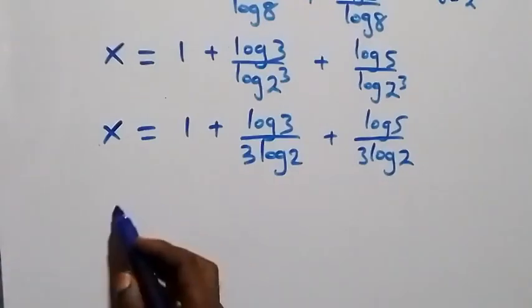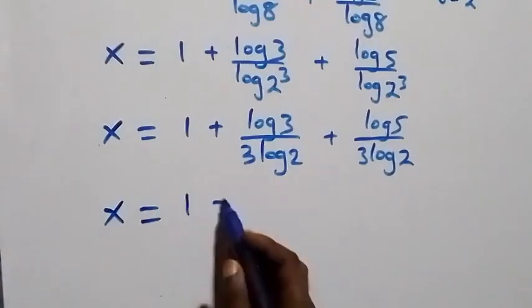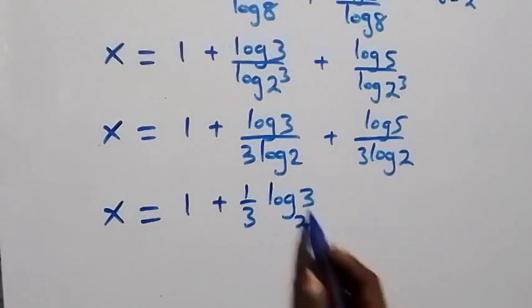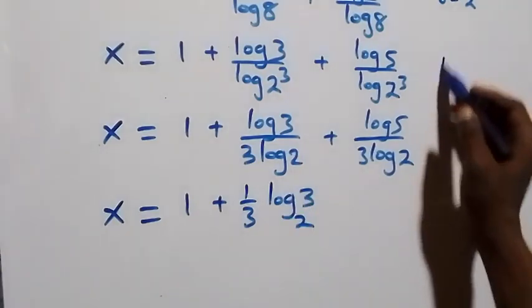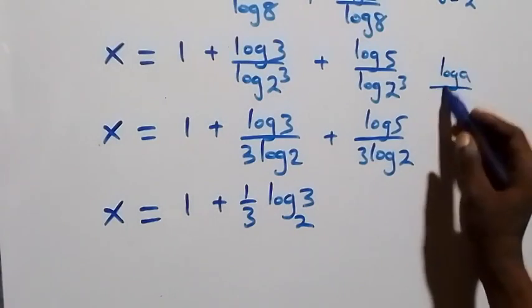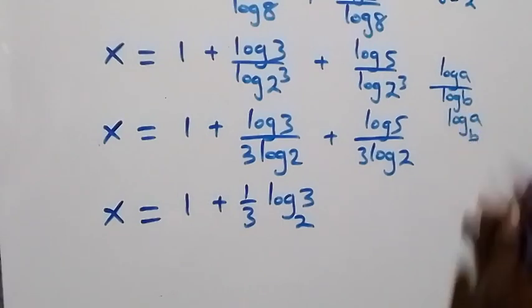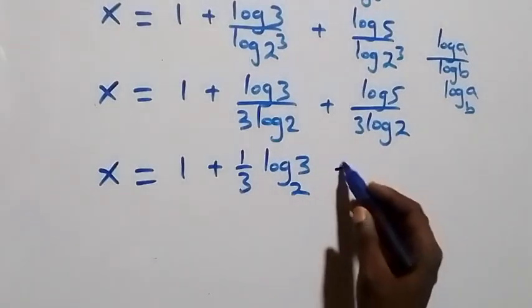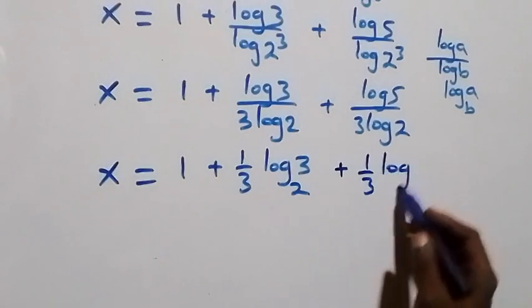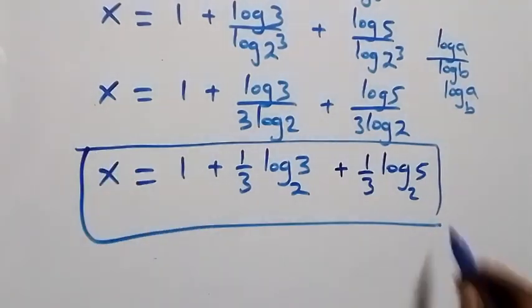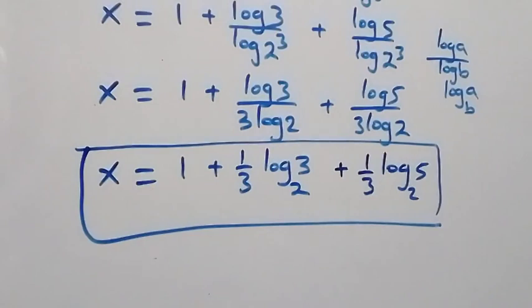Using the change of base formula — log a over log b equals log a to base b — we can write x equals 1 plus (1/3)·log₂3 plus (1/3)·log₂5. This is our final answer. Now let's verify it satisfies the original equation.